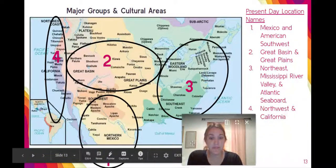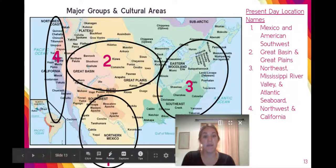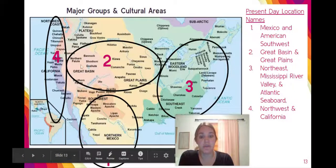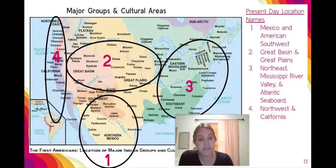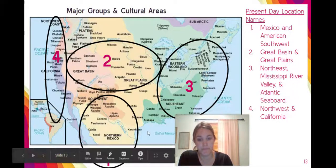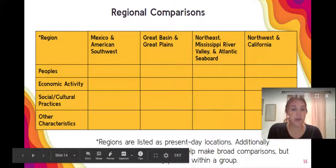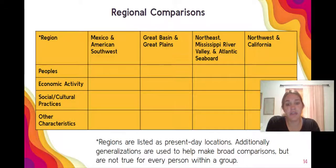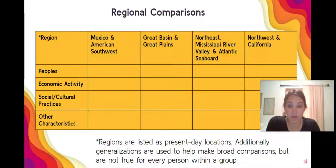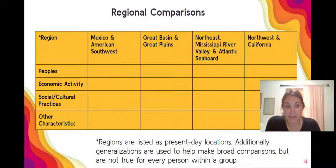According to the AP curriculum, these are the four regions we'll be looking at: Mexico and the American Southwest; the Great Plains and the Great Basin; the eastern half of the present-day United States; and the far West coast. You can pause the video and create this chart. We're going to look at the peoples that existed in each region, the economic activities, some social and cultural practices, and other characteristics. These will be generalizations that won't be true for all groups, but are generally true for each region based on the environment.